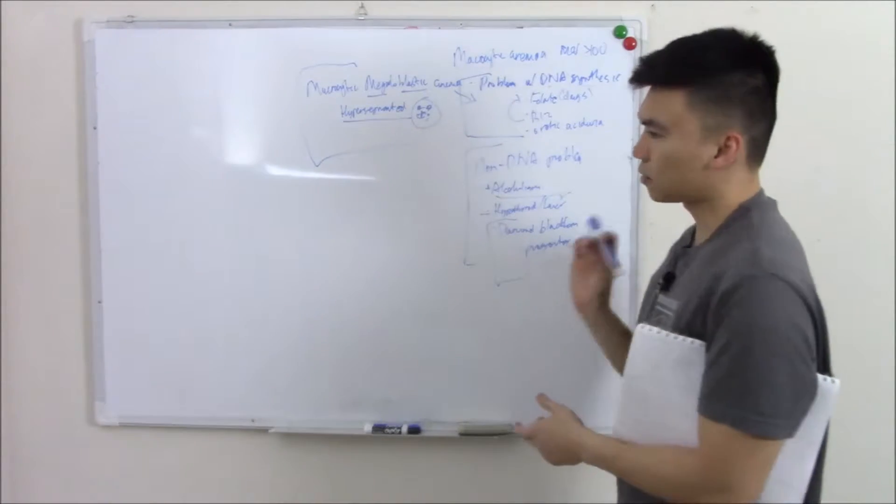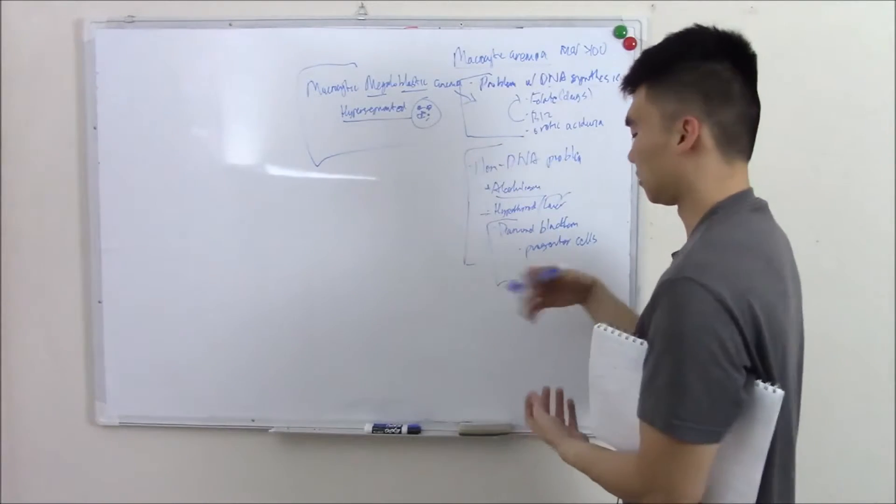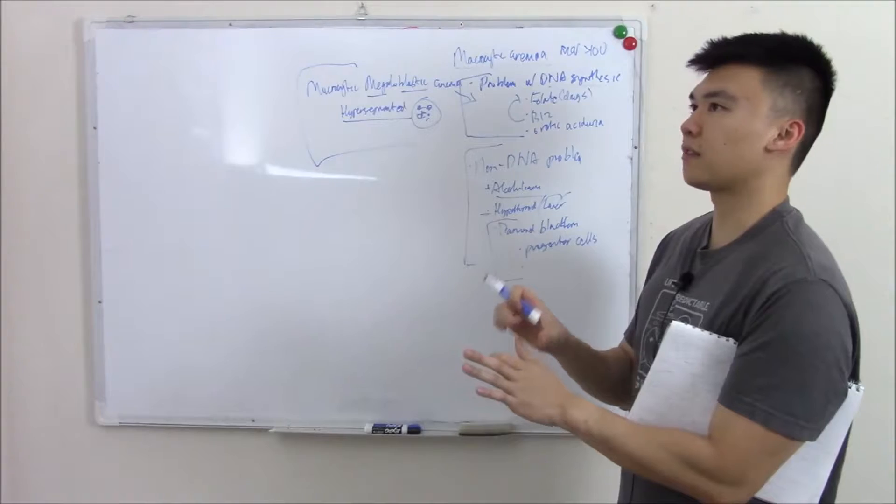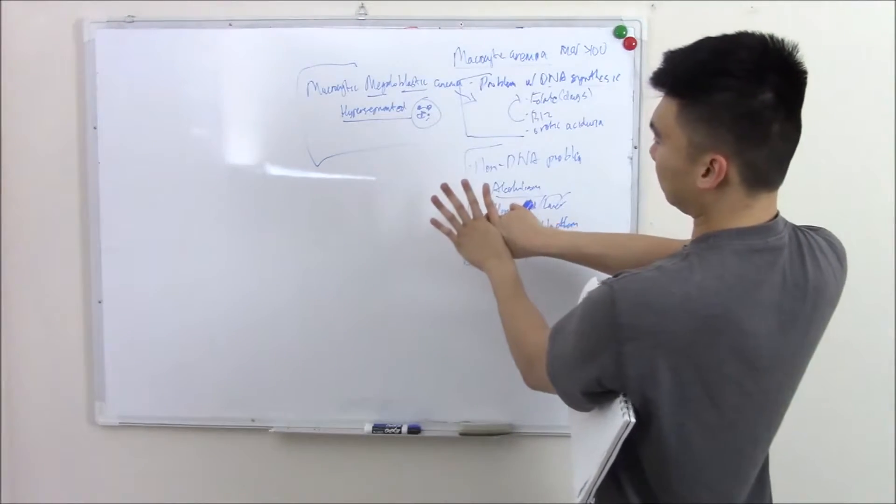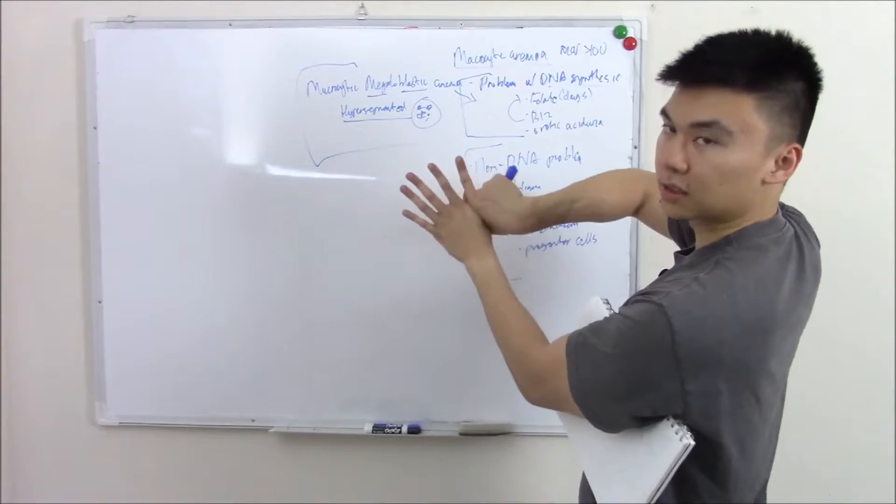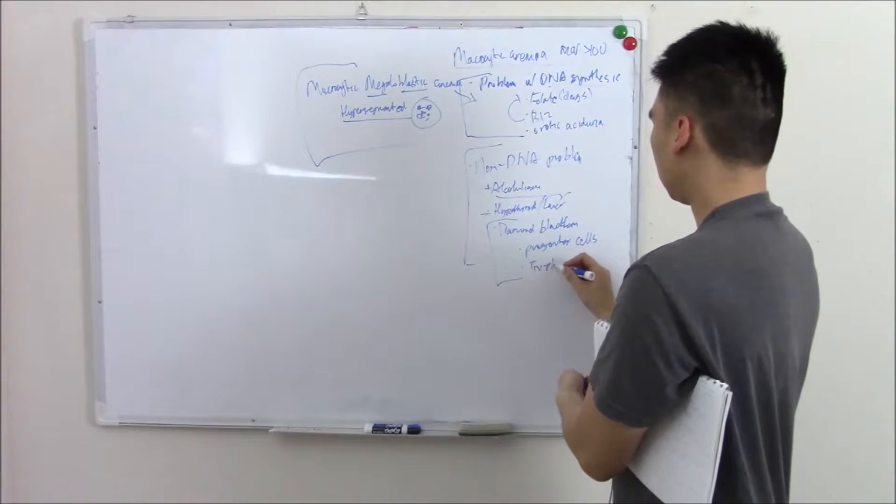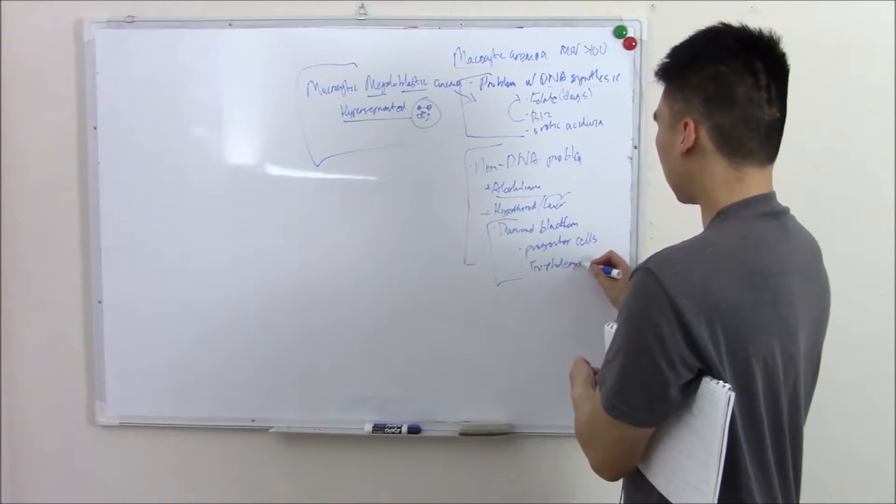The most characteristic thing about Diamond-Blackfan? Well, first it's seen in kids, so that's already a dead giveaway. One of the most characteristic things is they have triphalangeal thumbs—really long thumbs, so their thumbs basically look like five identical fingers. About 50% of these patients have these triphalangeal thumbs. You need to know that.